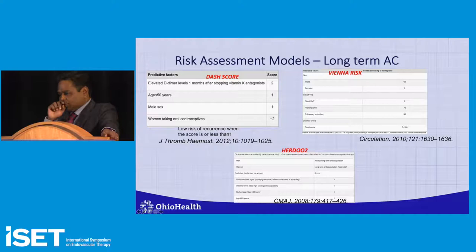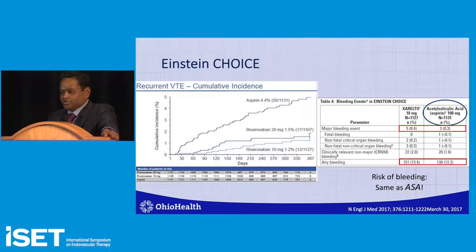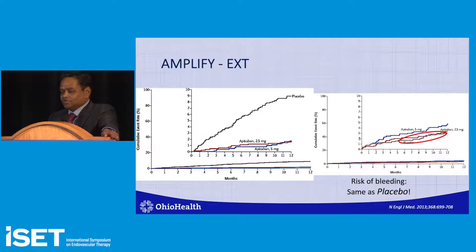For secondary prevention, two trials changed practice. The Einstein Choice non-inferiority study versus aspirin showed that rivaroxaban's bleeding risk was similar to aspirin 100 mg — extrapolated to 81 mg in the US. The Amplify Extend trial showed significant reduction in recurrence with low-dose apixaban, and bleeding was similar to placebo. Low-dose apixaban bleeding risk was essentially the same as placebo — it doesn't get better than that.